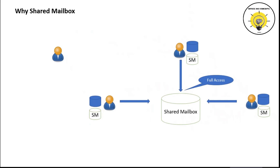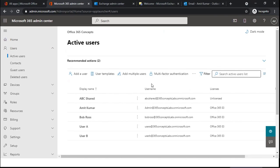Let's say a user sends an email to this shared mailbox. Any user who sends email to this shared mailbox — all three users who already have access will see that email reflecting within the shared mailbox which is added in their OWA or Outlook. Now let me switch to my browser and show you how a user mailbox and a shared mailbox work.